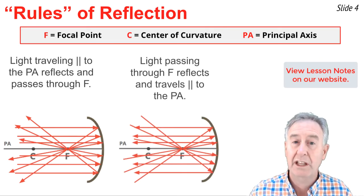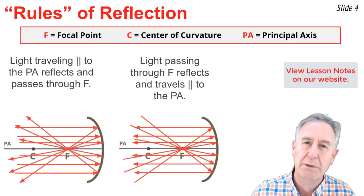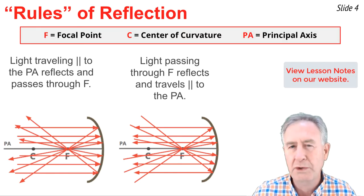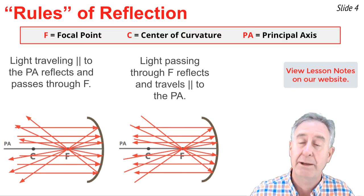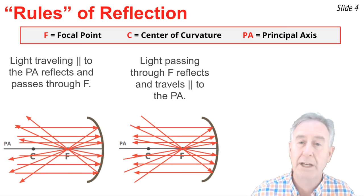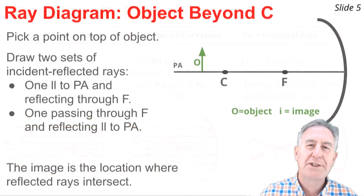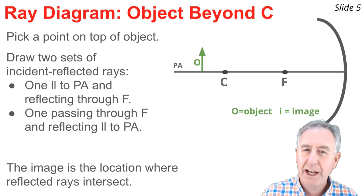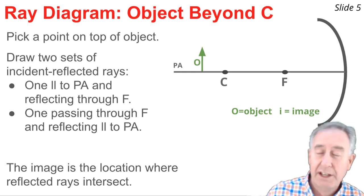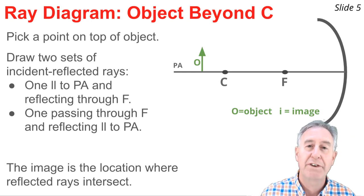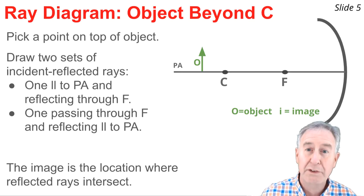The second special rule is that light traveling through the focal point on the way to the mirror will reflect and travel parallel to the principal axis. These two rules are used most often in constructing ray diagrams for object positions. But there's a third rule that becomes useful on occasion: light traveling through the center of curvature will reflect back through the center of curvature along the same path in the opposite direction. I will be constructing ray diagrams beginning with the case where the object is located beyond the center of curvature, more than one radius of curvature from the surface of the mirror.